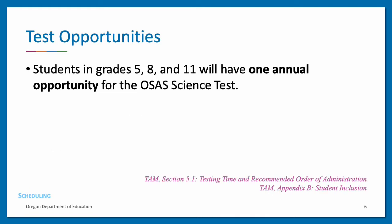Students in grades 5, 8, and 11 will have one OSAS science test opportunity in that academic year. More information about testing time and recommended order of administration can be found in Section 5.1 of Oregon's Test Administration Manual. Student inclusion information can be found in Appendix B.